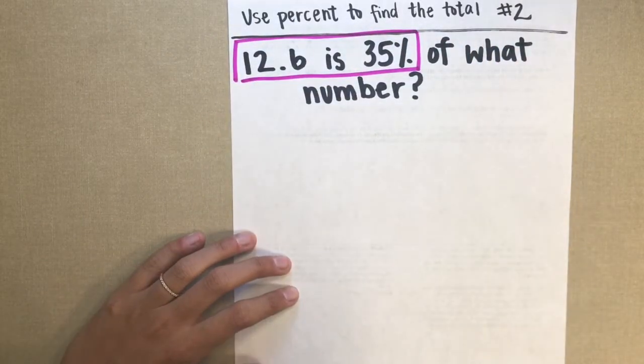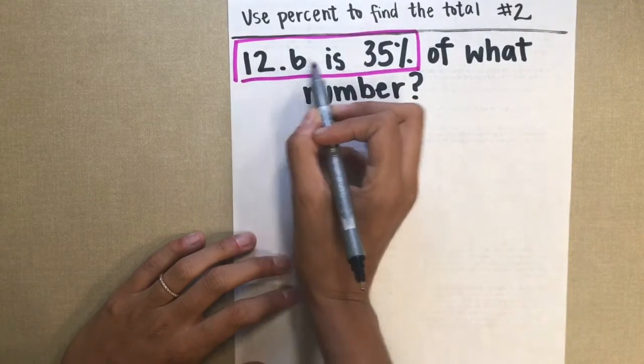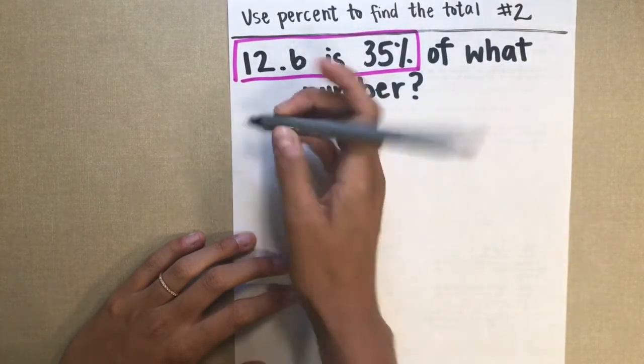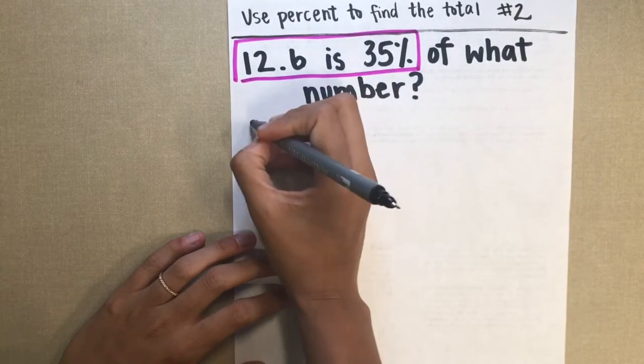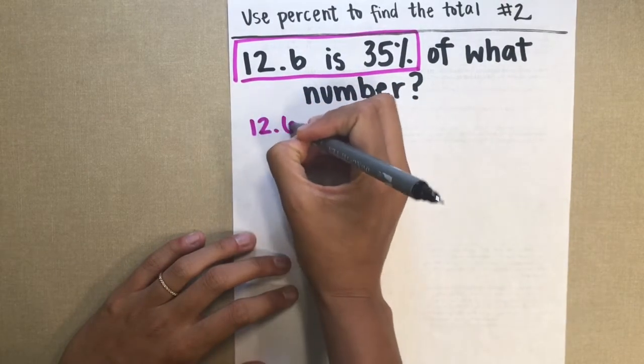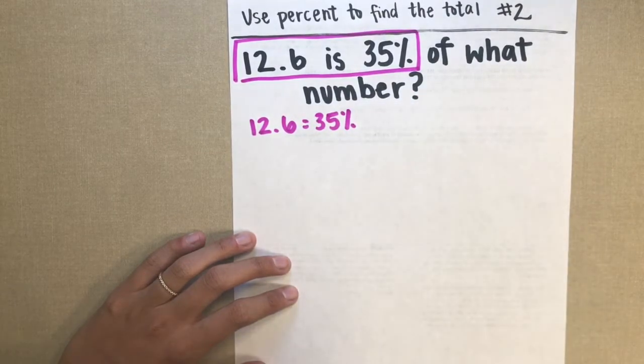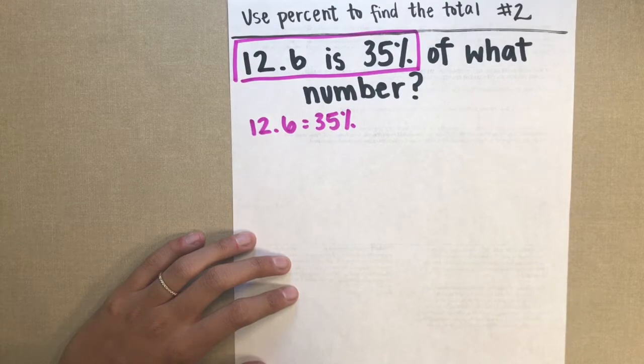This is my key information. That 12.6 is 35%. So what that means is that this 12.6 is equal to 35%. If I wanted to represent that visually, what it would look like is a bar which would be equal to 100%.